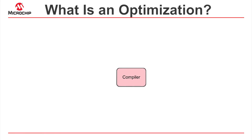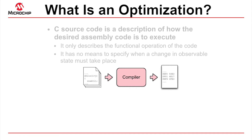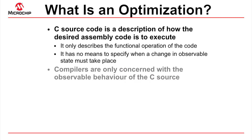A C compiler turns C source code into assembly instructions. A C program is a description of how that assembly code should execute, but only at a functional level. It does not indicate how the generated code has to operate, nor does it indicate when any observable change must take place.